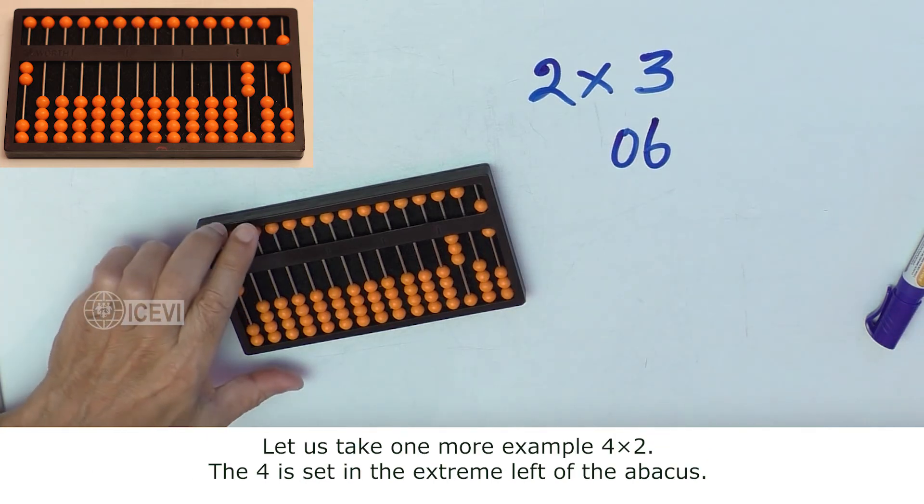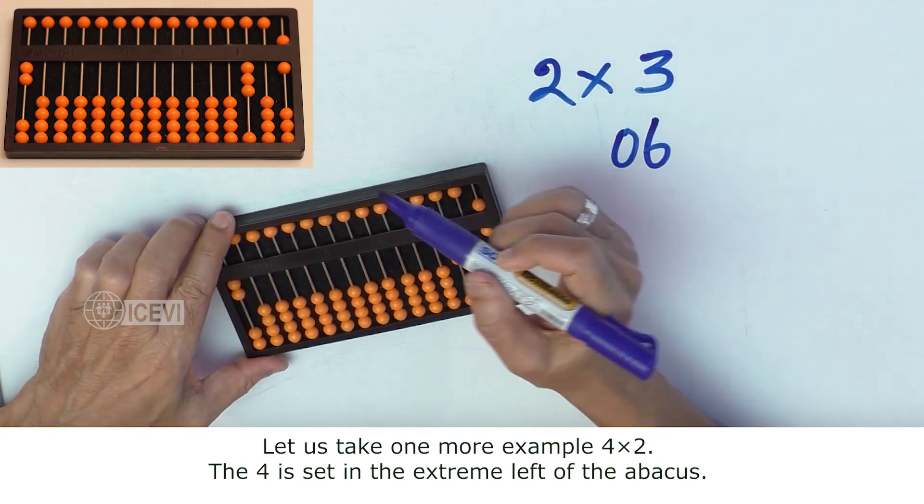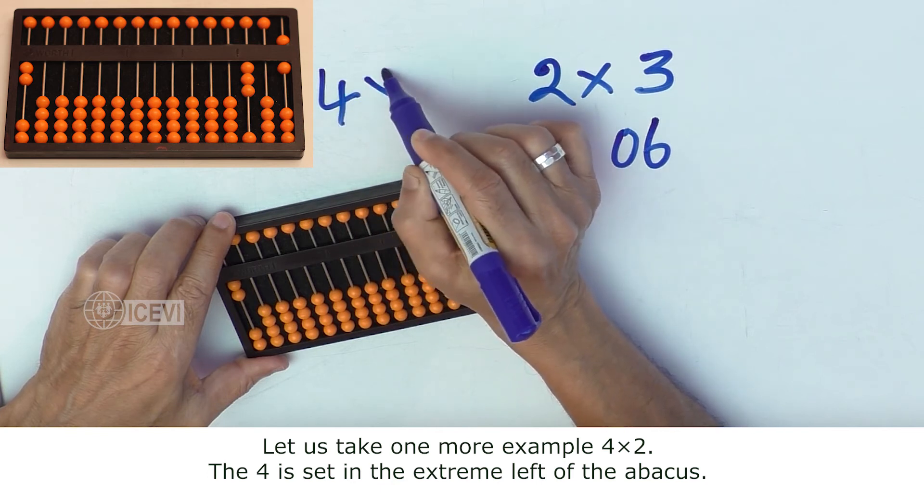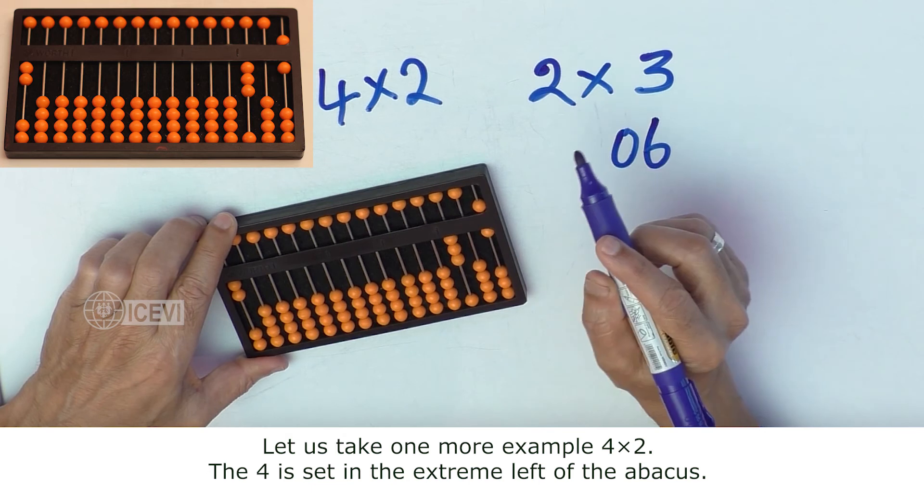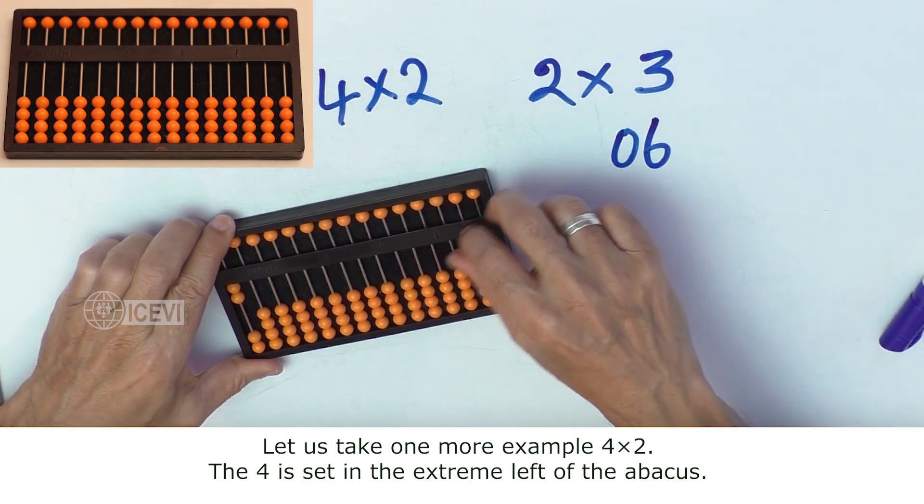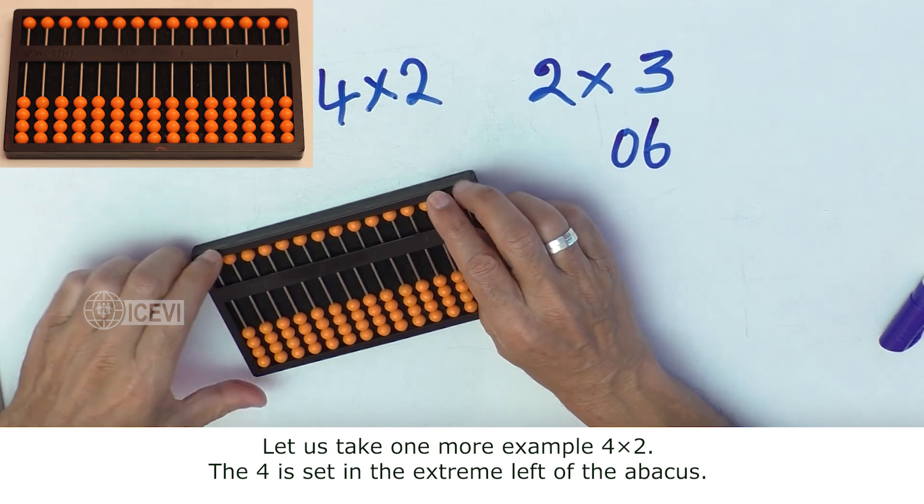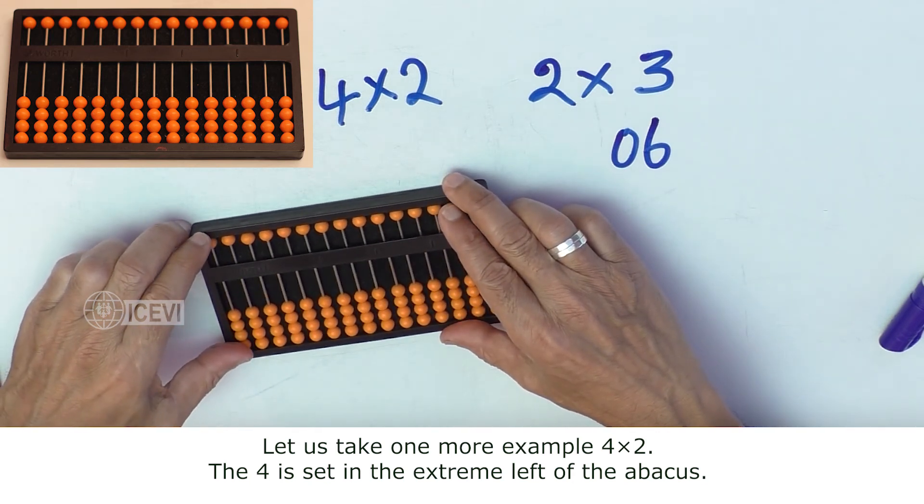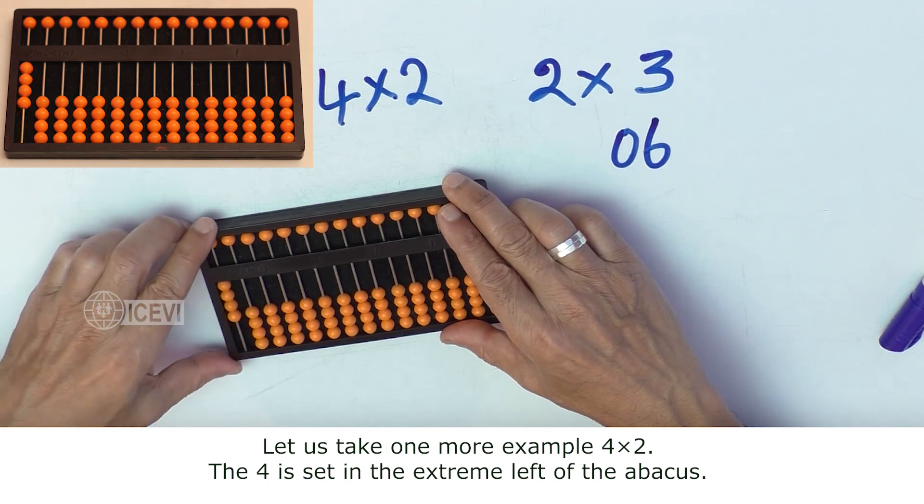Now, let us take one more example. Let us take 4 as the multiplier, 2 as the multiplicand. First, we clear the numbers in the abacus. Then we set the number 4 in the extreme left of the abacus.